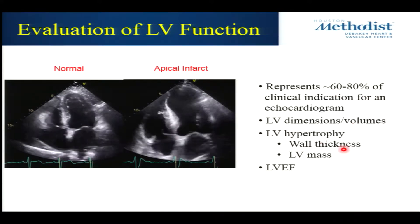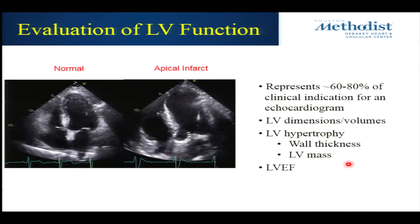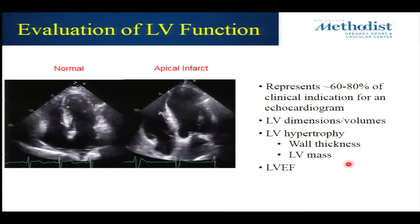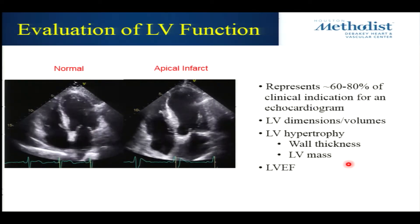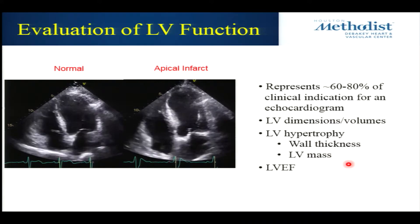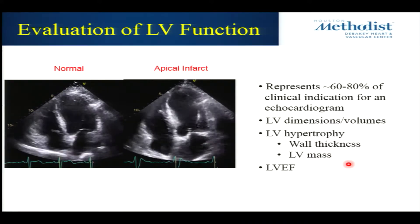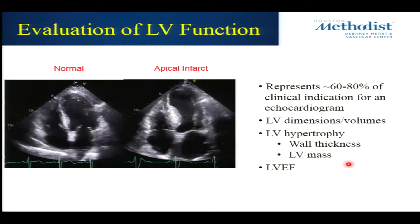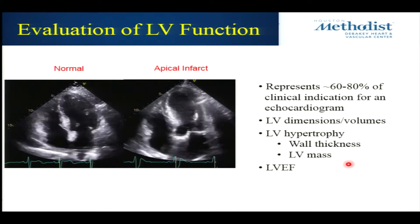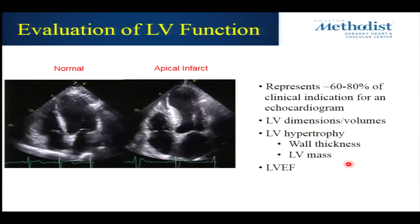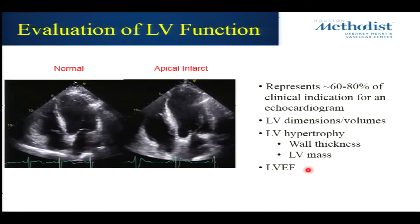As mentioned, LV hypertrophy: if somebody has hypertension, that's a great indication to see. It's almost like your hemoglobin A1C of diabetes, right? If you're wondering about their blood pressure control and they have hypertrophy and increased LV mass, you know that most likely this blood pressure is not very well controlled.